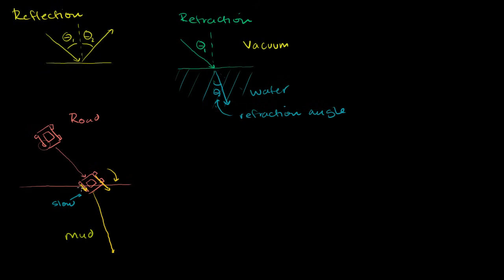Obviously light doesn't have wheels and doesn't deal with mud, but it's the same general idea. When traveling from a faster medium to a slower medium, you can imagine the wheels on the side of the light closer to the vertical hit the medium first, slow down, so the light turns. Going the other way — light coming out of the slow medium — the left side comes out first, moves faster, and the car turns the other way. This gives you a gut sense of which direction light bends.